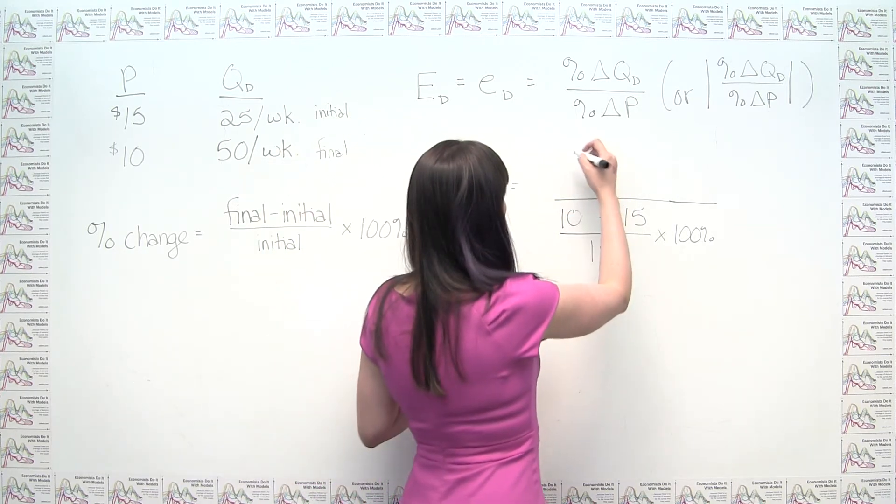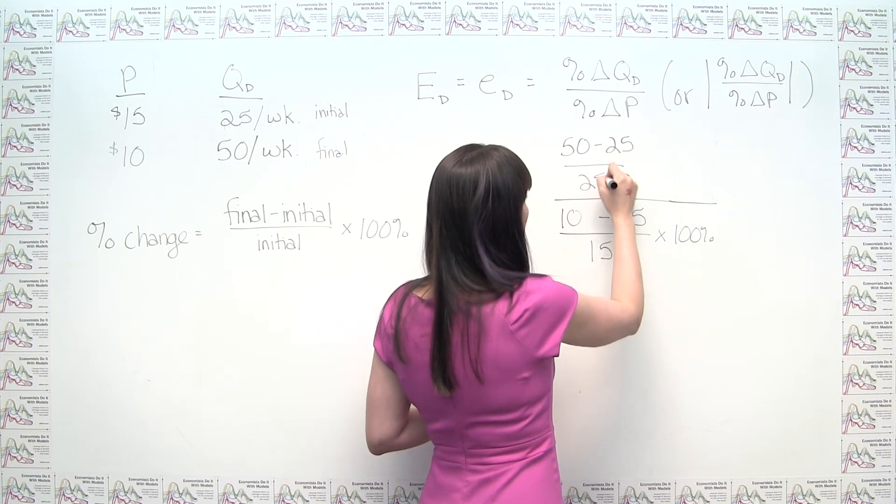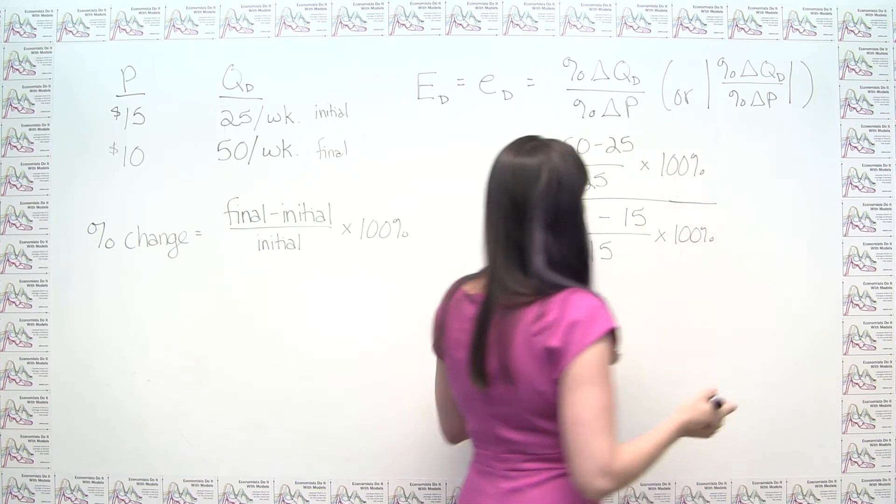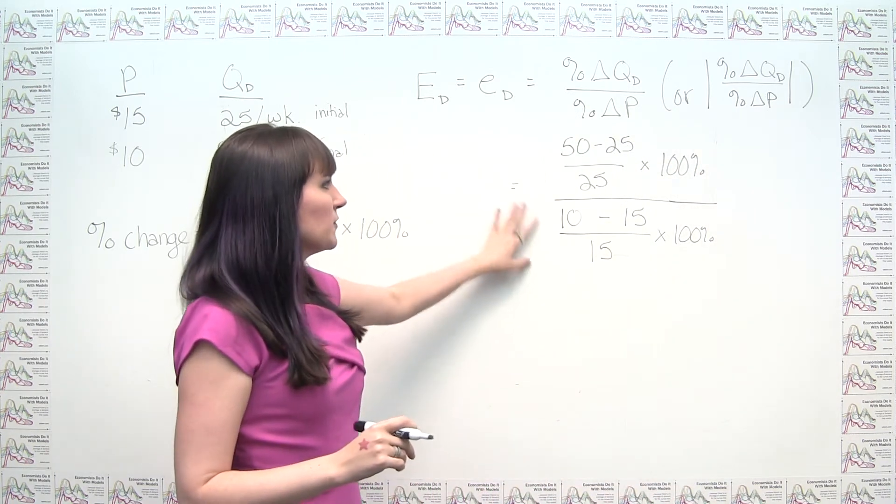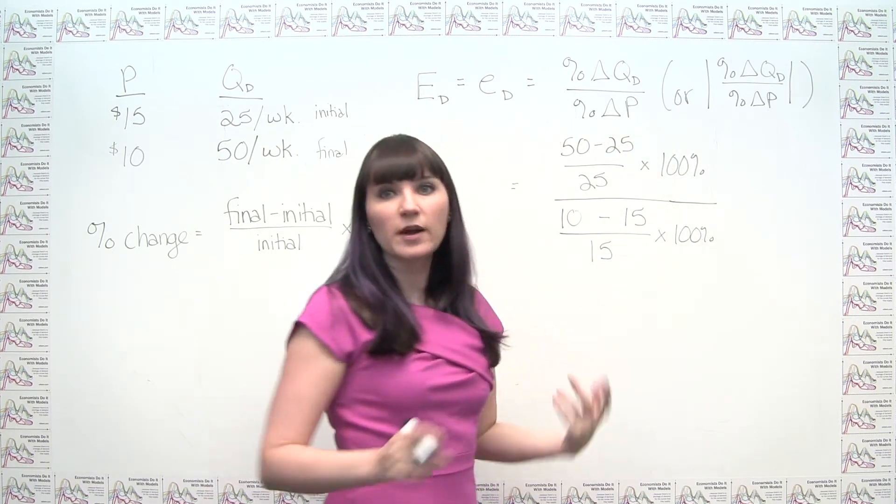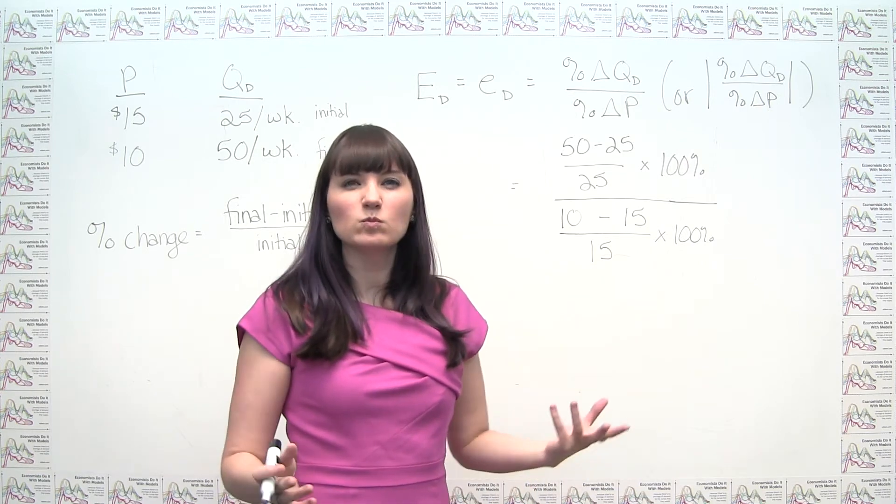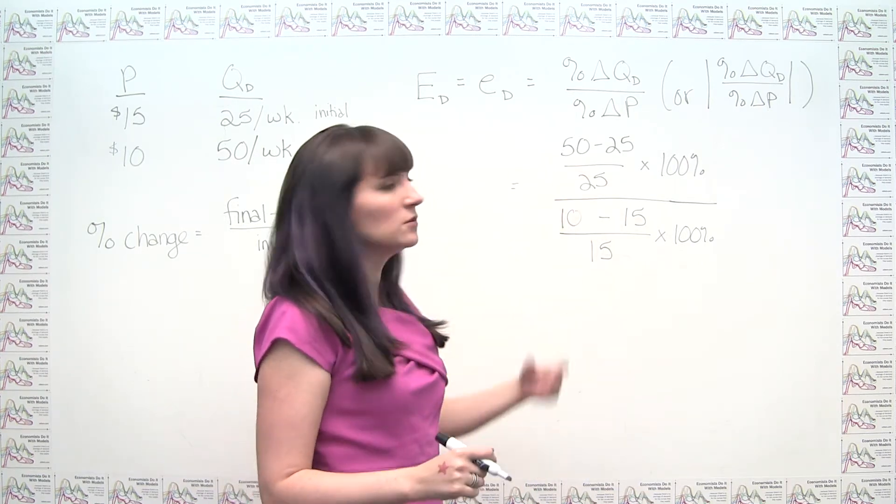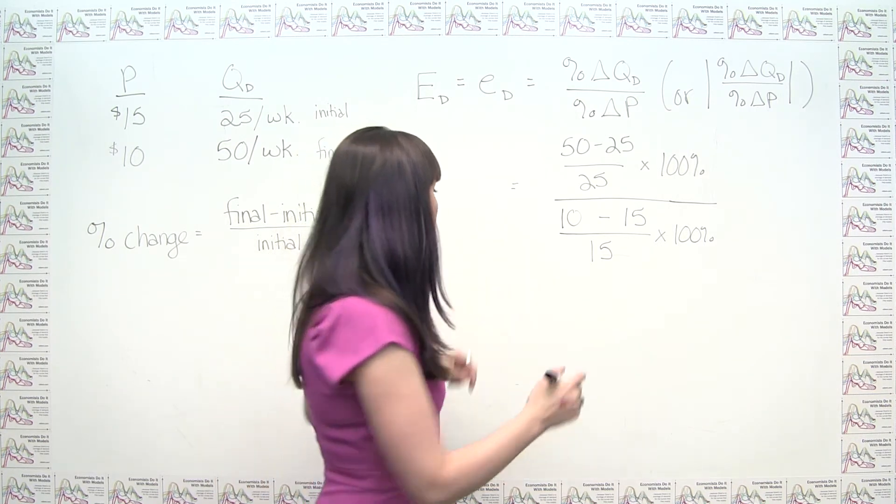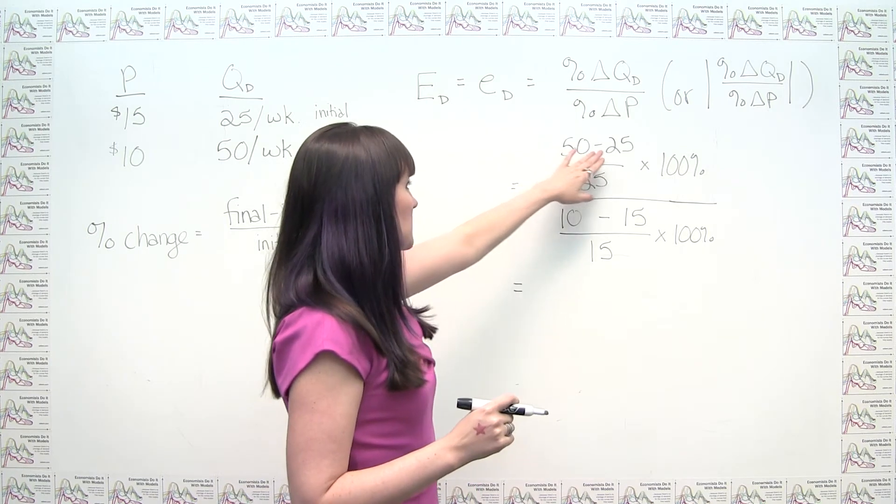So again, here, this is just going to be 50 minus 25 over 25 times 100%. So there are a number of things that we could do with this. We could go through and calculate each of the percentages and then just divide them. We could notice that the 100% cancel out. A lot of different options. And any one that you do that's arithmetically correct is going to get you to the same place.